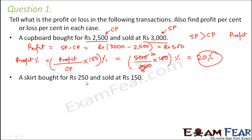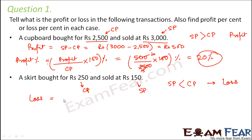The second case: a skirt bought for rupees 250 was sold at rupees 150. So cost price is 250 and selling price is 150. In this case, selling price is less than the cost price, which means there is a loss. Loss is given by cost price minus selling price, which is 250 minus 150, that is rupees 100.